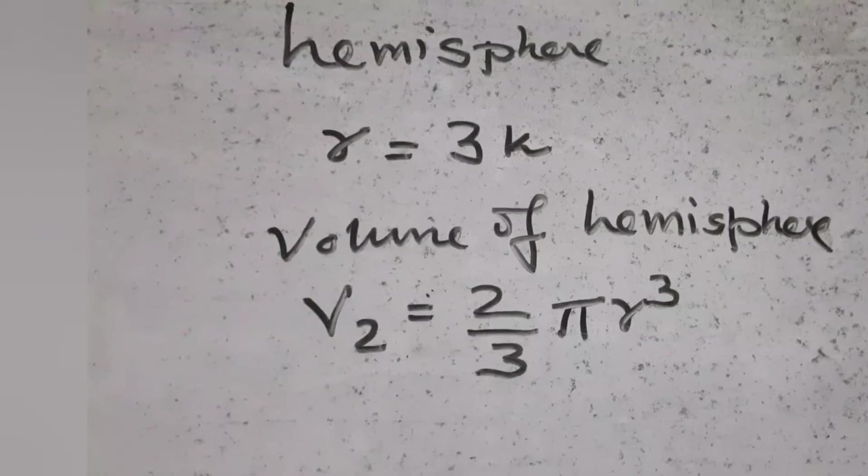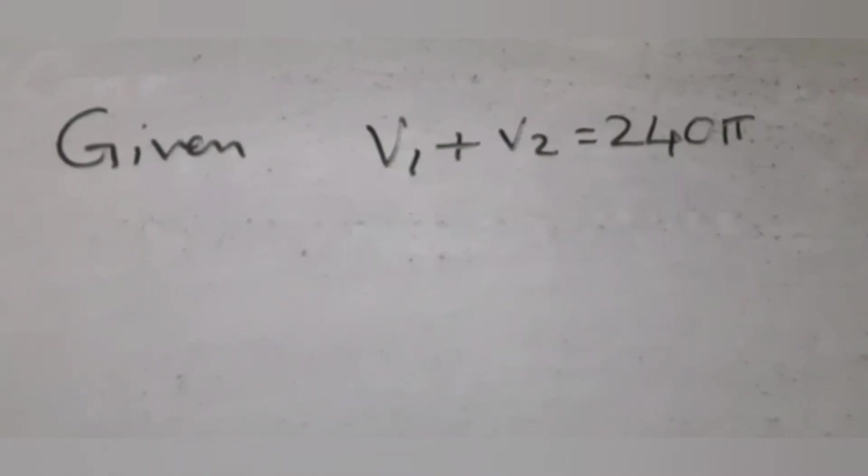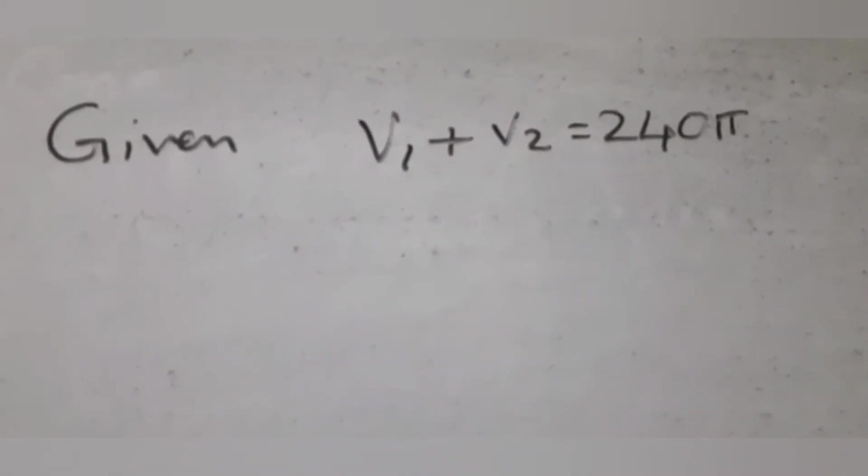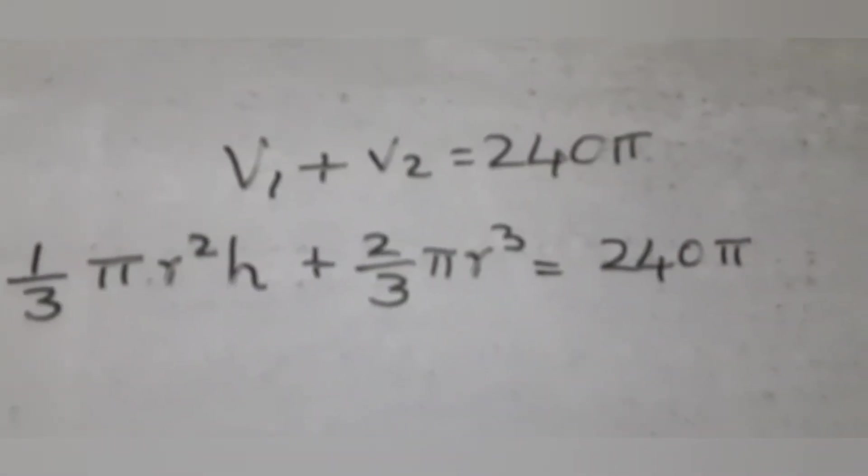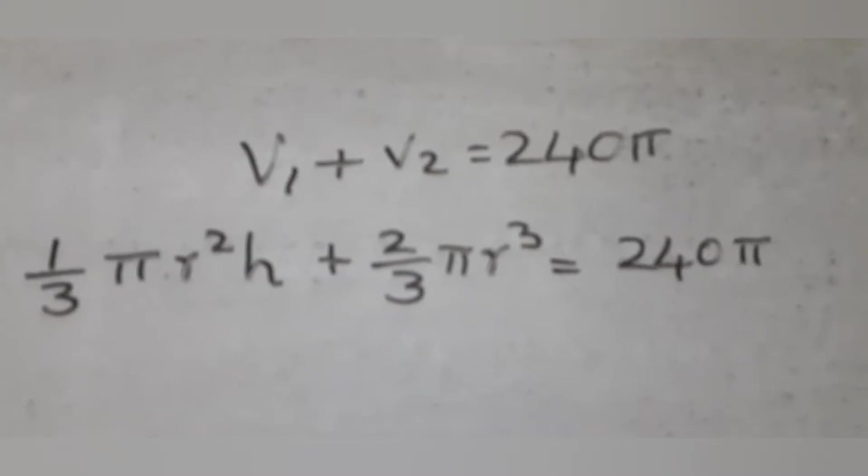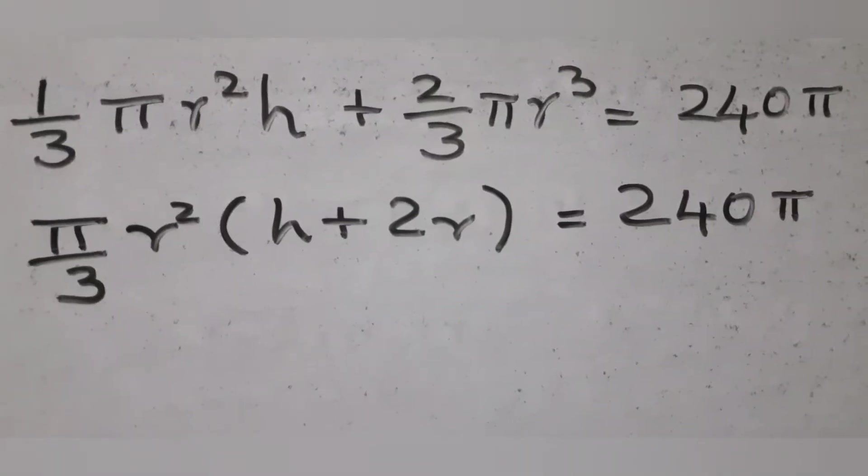Now use the formula for volume of cone and volume of hemisphere. Given that the combined volume is 240 pi, so apply the formulae for volume of cone and volume of hemisphere, take common factors, substitute for R and H and rearrange to find K.